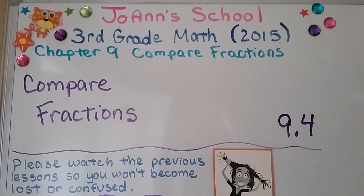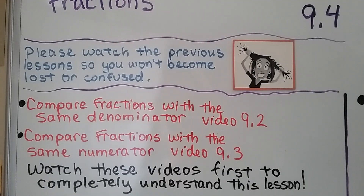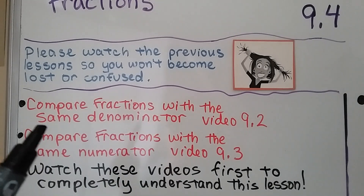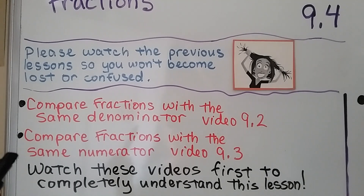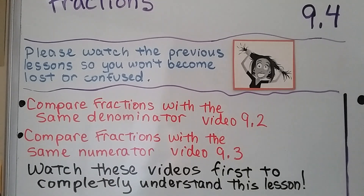Third grade math, lesson 9.4. Now we're going to compare fractions using the knowledge we've learned in the last few lessons. You need to have watched video 9.2, where we learned about comparing fractions with the same denominator, and video 9.3, the one right before this one, when we learned how to compare fractions with the same numerator. If you watch these videos first, it'll help you completely understand this lesson. They're linked in the description.